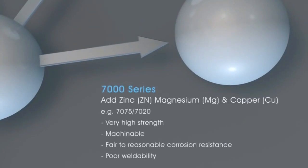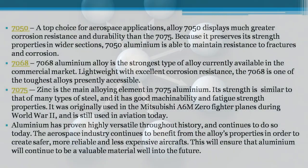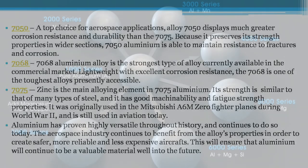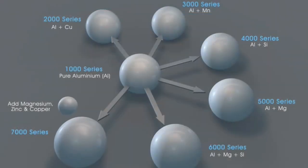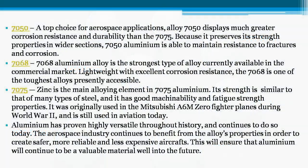6061 is especially common in home-built aircraft. 7050 — a top choice for aerospace applications. Alloy 7050 displays much greater corrosion resistance and durability than 7075 because it preserves its strength properties in wider sections.